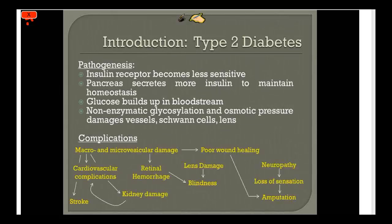The complications of diabetes are extensive. Macrovascular damage to larger vessels leads to cardiovascular complications and stroke. Cardiovascular complications go hand-in-hand with kidney damage — they perpetuate each other — which is why patients end up on dialysis. Smaller vessel damage can lead to retinal hemorrhage and blindness, osmotic dysregulation can cause lens damage, and there is also poor wound healing from damage to small vessels. Nerve damage causes neuropathy, and patients often report loss of sensation in their extremities.